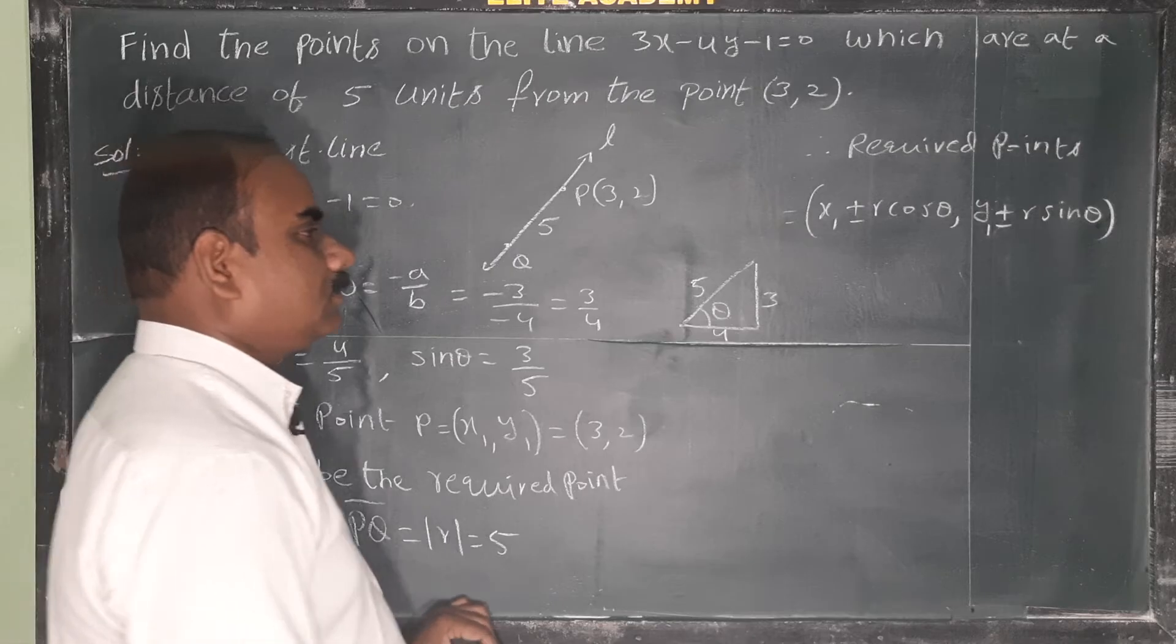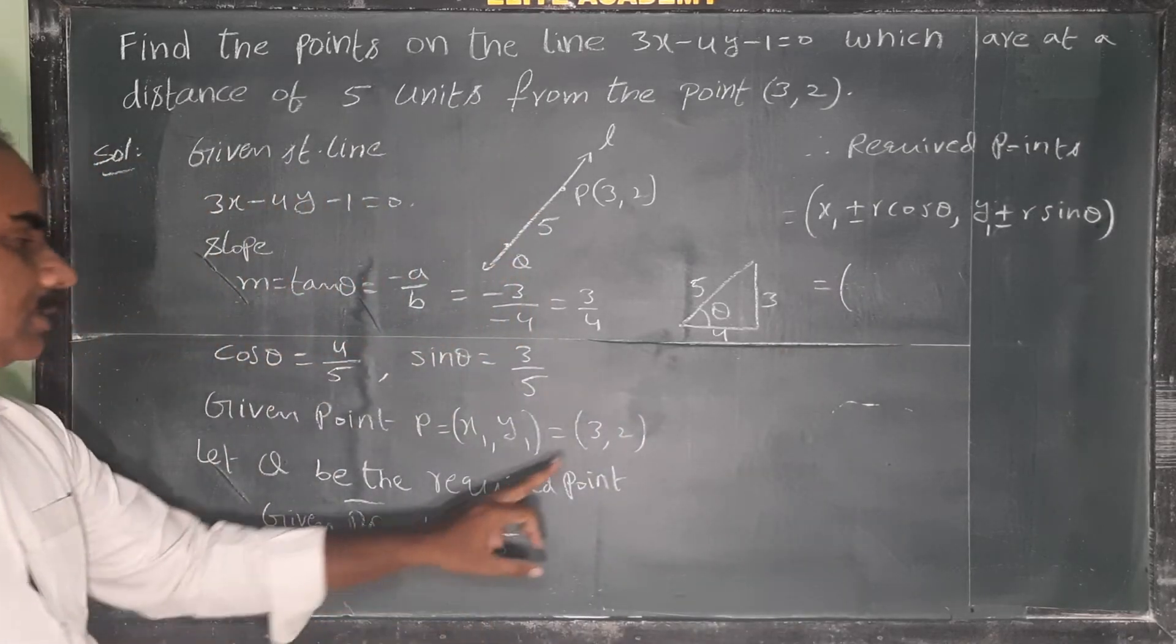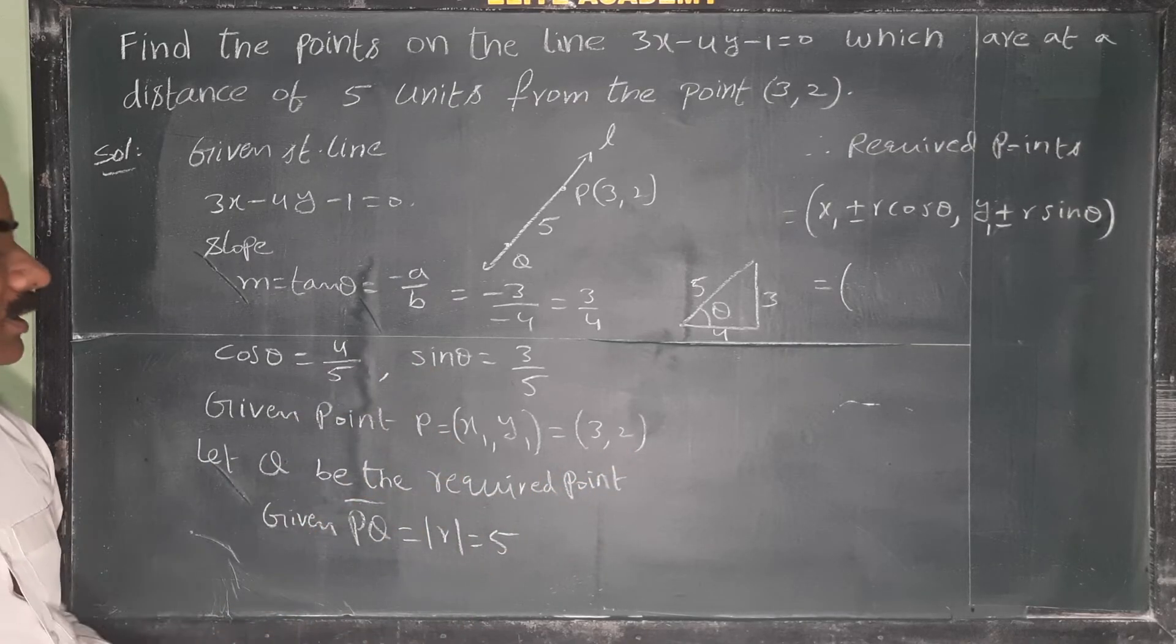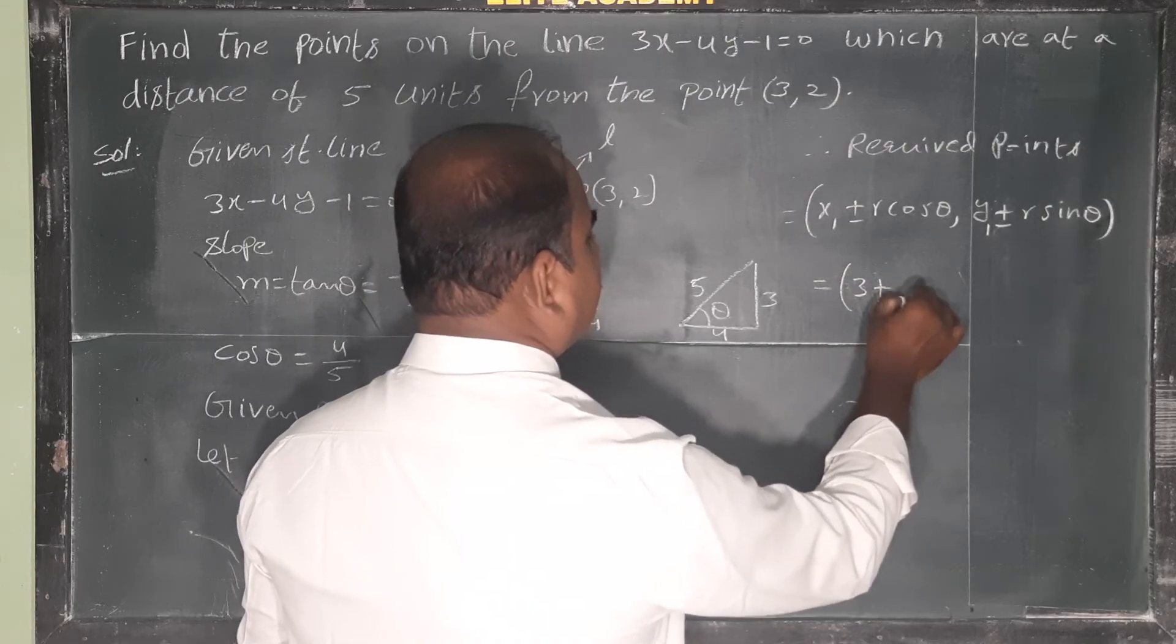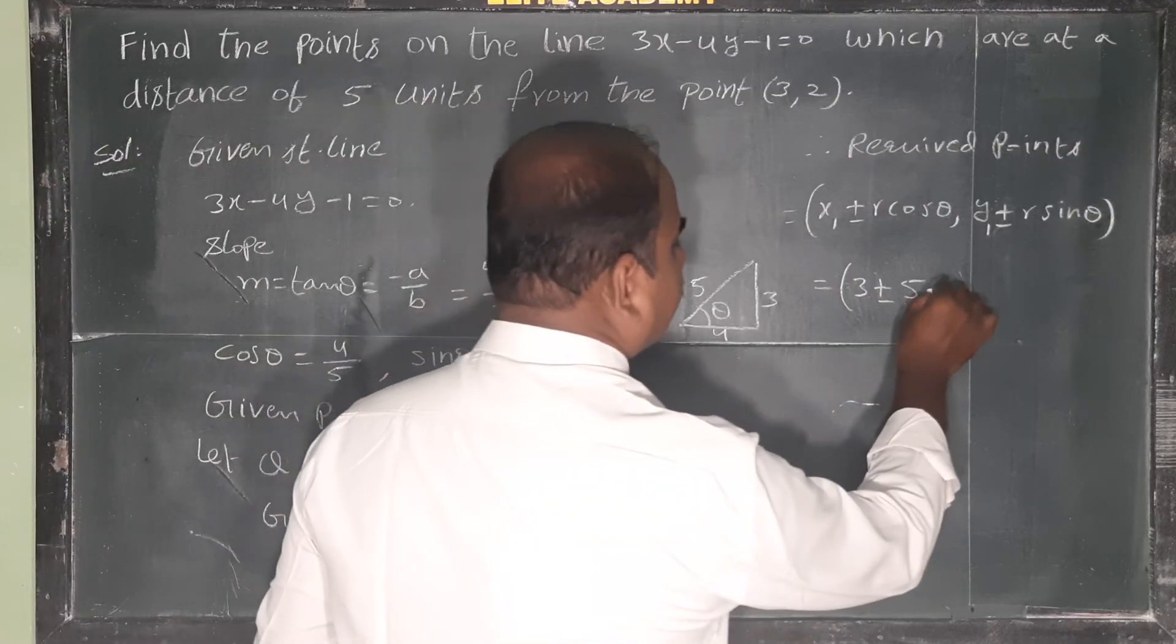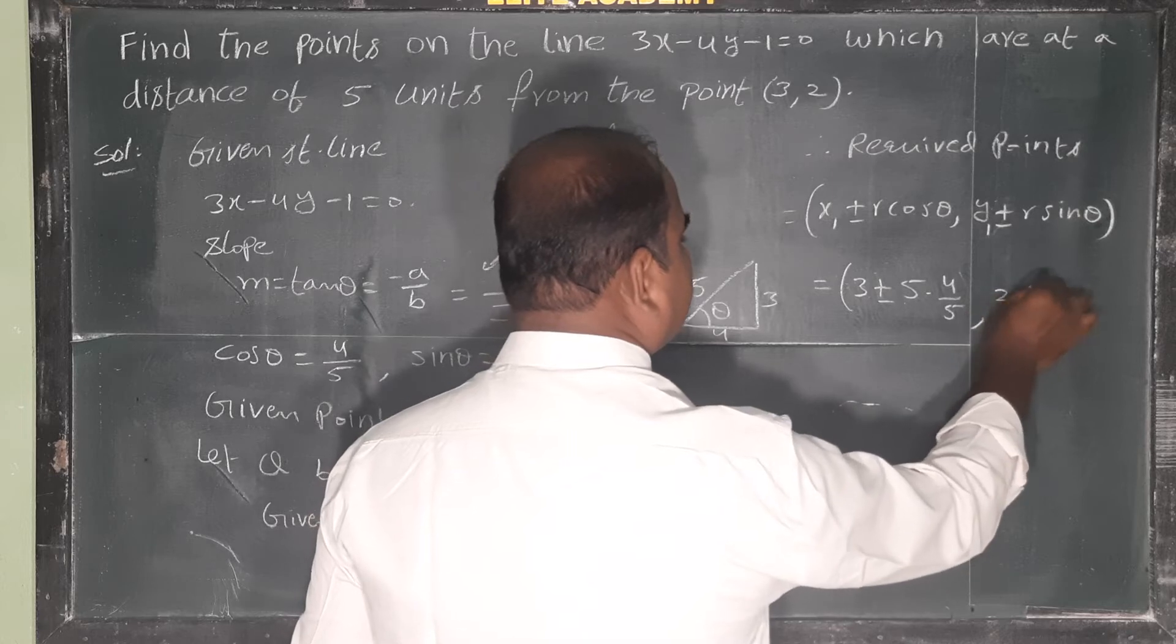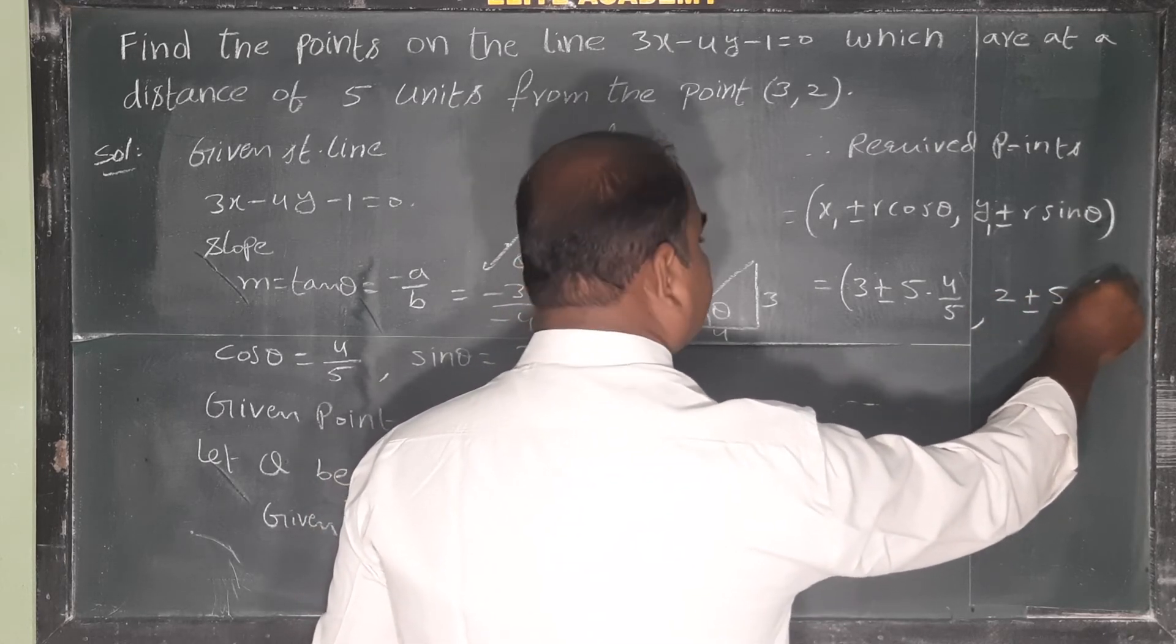So substitute the values: x₁, y₁, r is 5, cos theta, sin theta. So x₁ is 3, plus or minus r is 5, cos theta means 4 by 5, times 4 by 5. y₁ means 2, plus or minus 5, sin theta means 3 by 5.